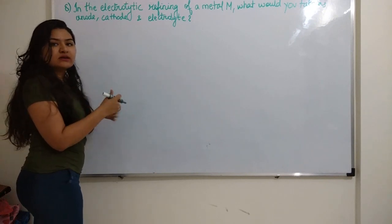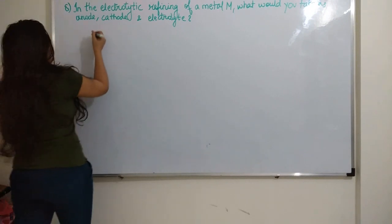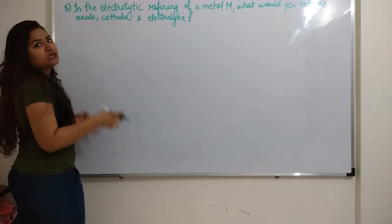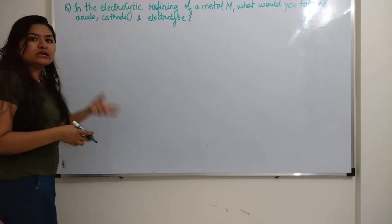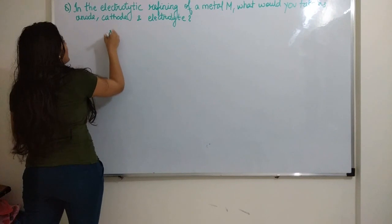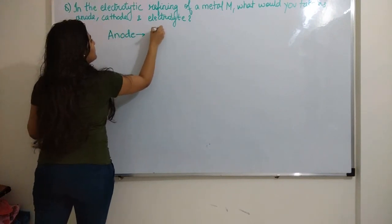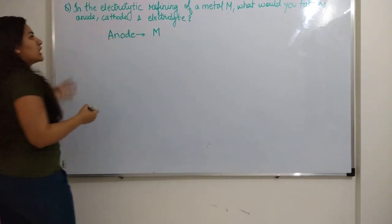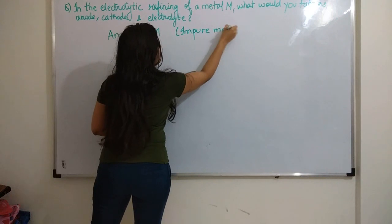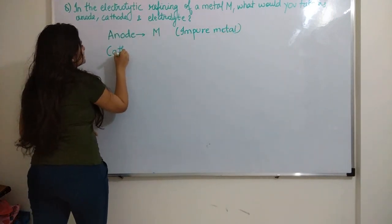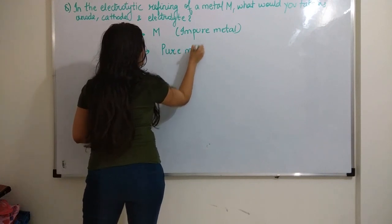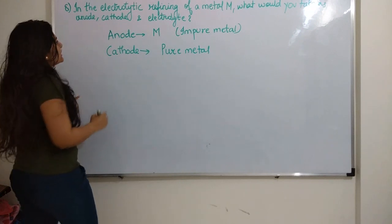Because M, we are going to refine that, so that is impure in state. The one which has to be taken as anode is always impure, because anode starts shedding impurities in the form of anode mud. So anode will be M, which is the impure metal.